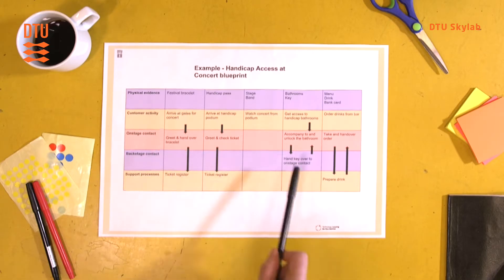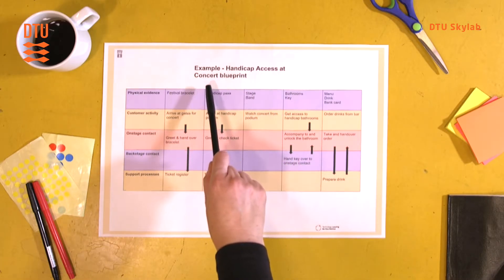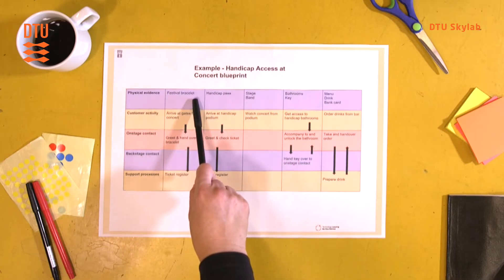And this of course differs from whatever service or system you are designing. But here we have an example of a handicap access at a concert. So I'll take you through the first column here.